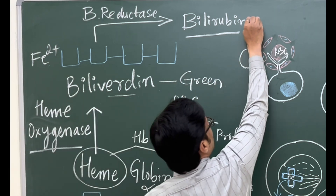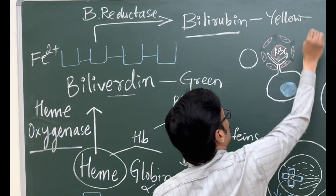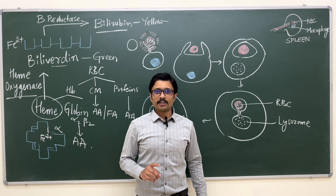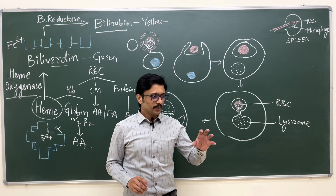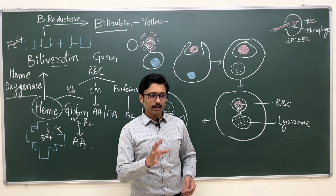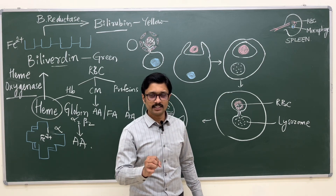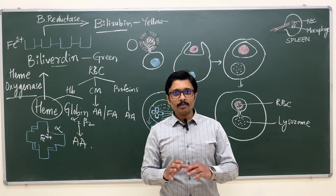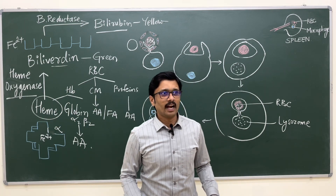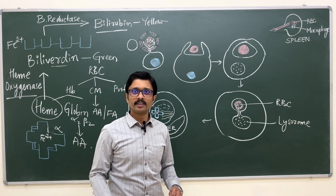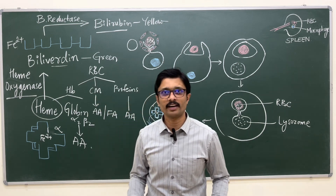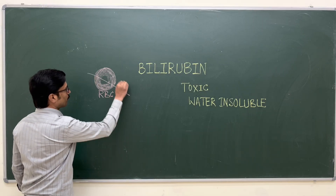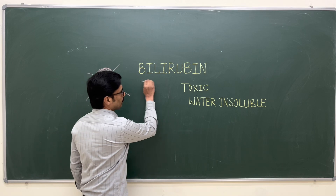Biliverdin is a green-colored pigment and bilirubin is a yellow-colored pigment — both are bile pigments. In summary: RBCs after 120 days are trapped within the splenic capillaries; macrophages cause phagocytosis; RBCs are broken down releasing hemoglobin; hemoglobin is split into heme and globin; heme is converted to biliverdin; and bilirubin is formed by reduction of biliverdin.